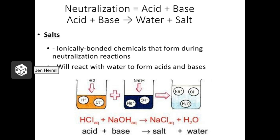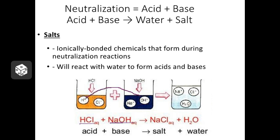Chemicals we refer to as acids and bases are made of more than just water. Here's a good example: hydrochloric acid and sodium hydroxide, a base. When you mix hydrochloric acid with water, it dissociates into hydrogen ions and negative chlorine ions. Sodium hydroxide will also dissociate into positive sodium ions and negative hydroxide ions. If you mix this acid with this base, the hydrogen ions are attracted to the hydroxide ions and form water, while the chlorine ions and sodium ions form an ionic bond — good old table salt, NaCl.